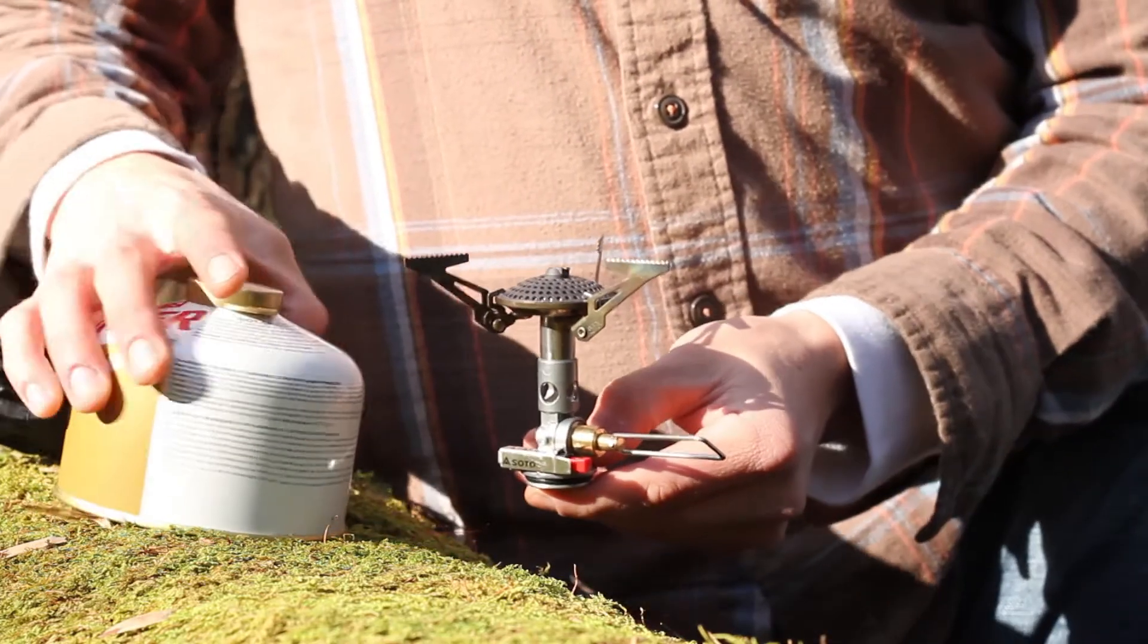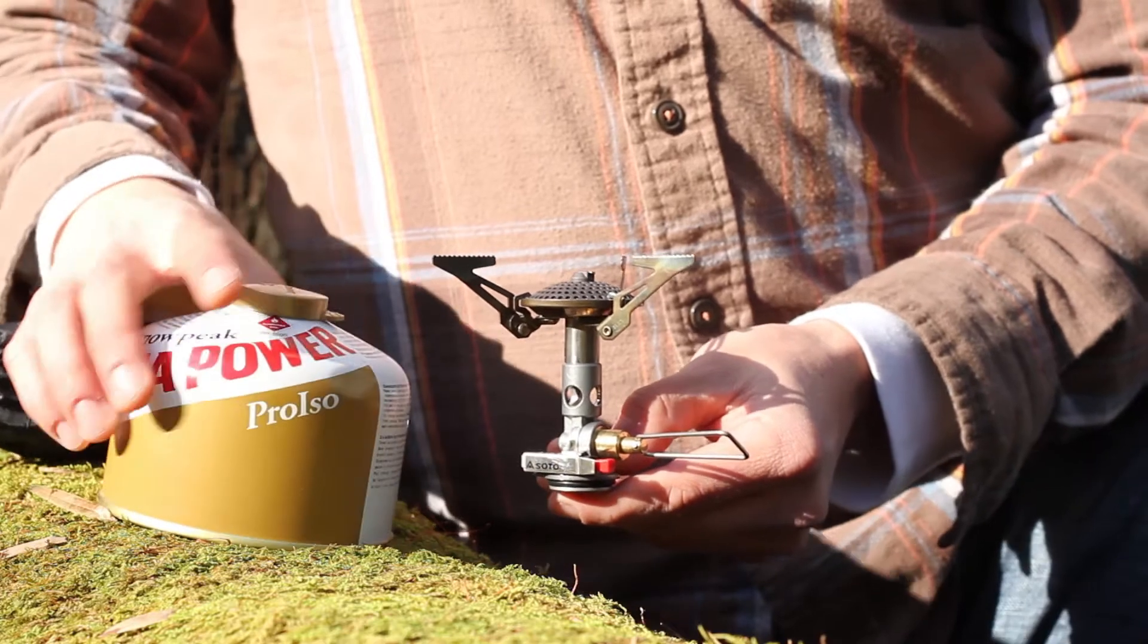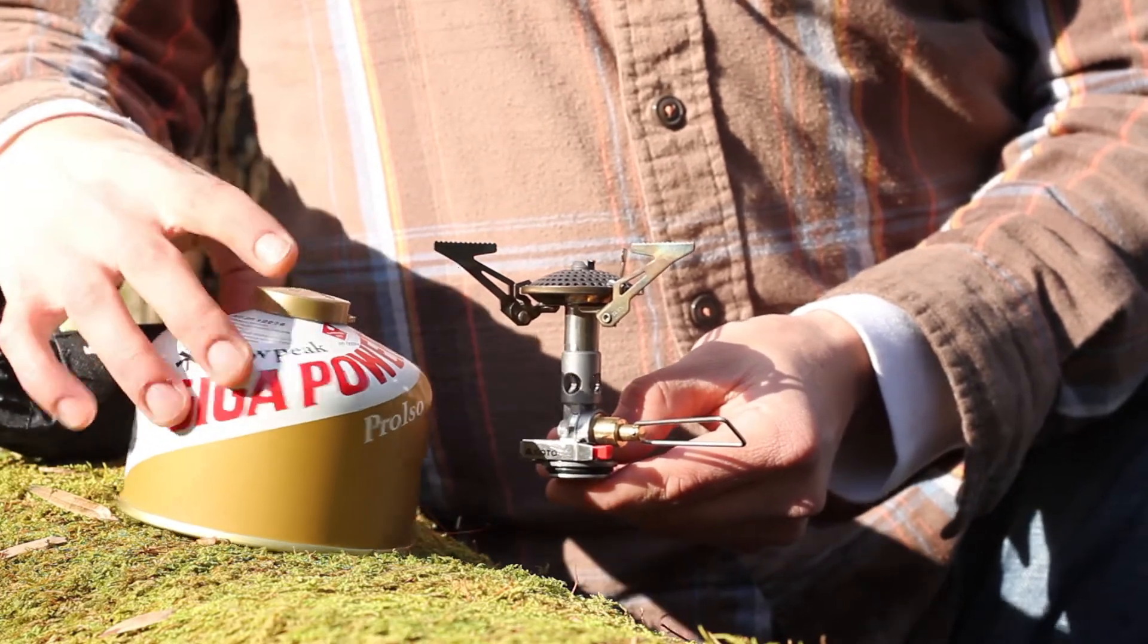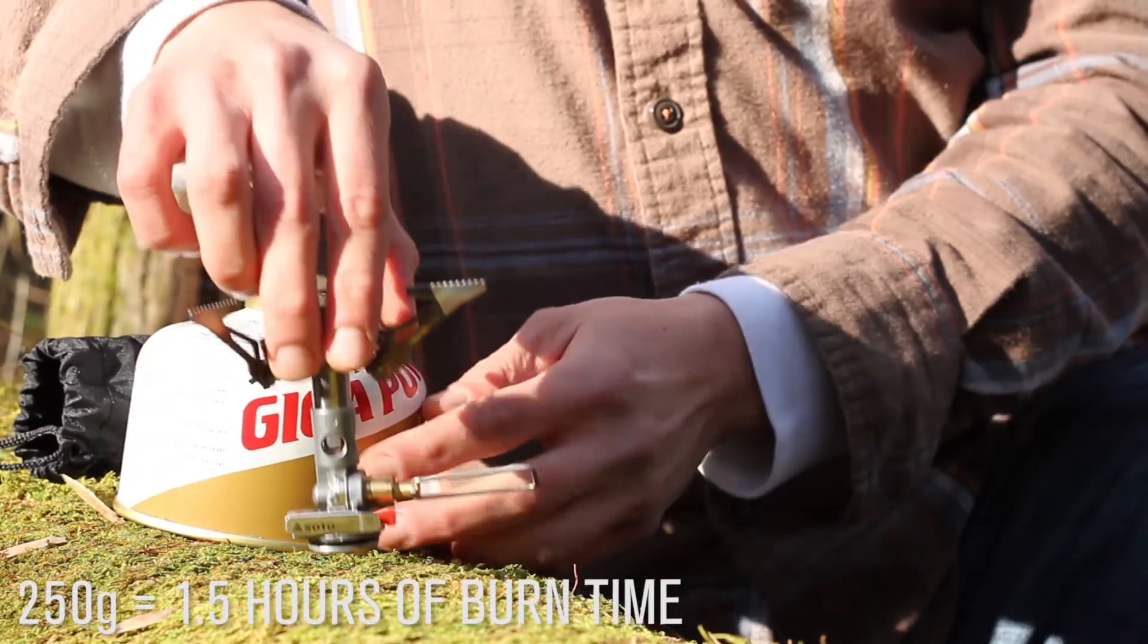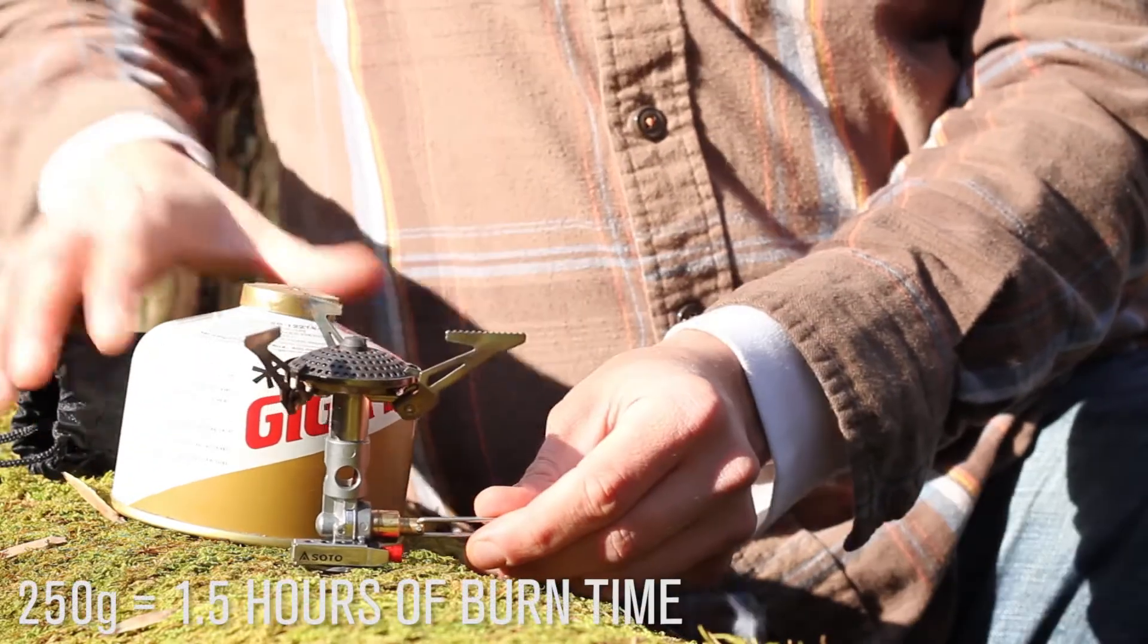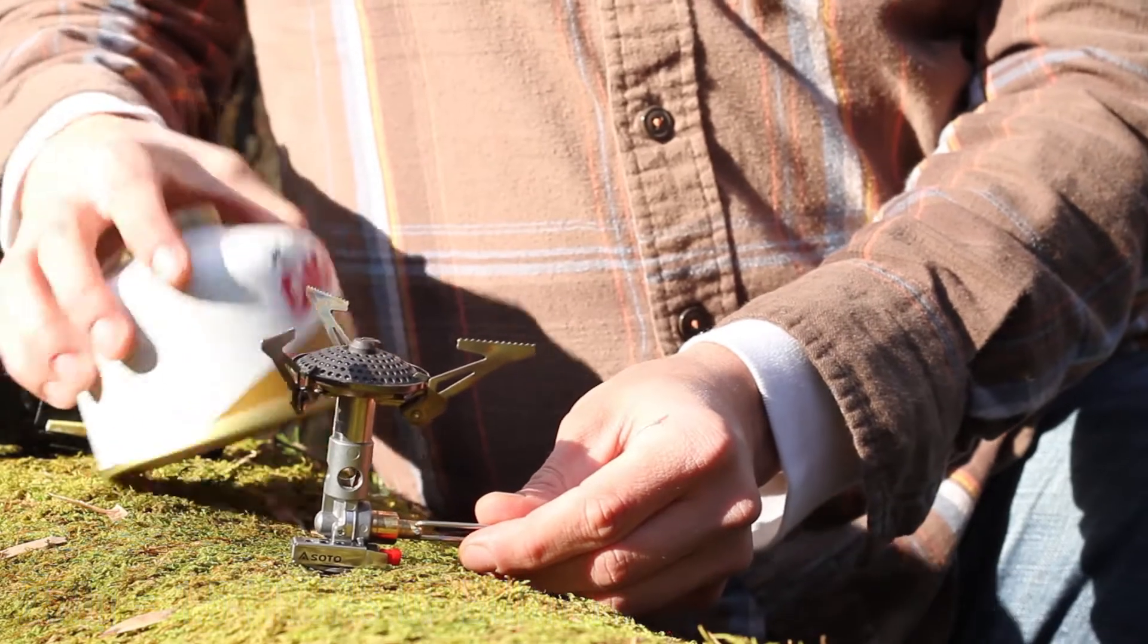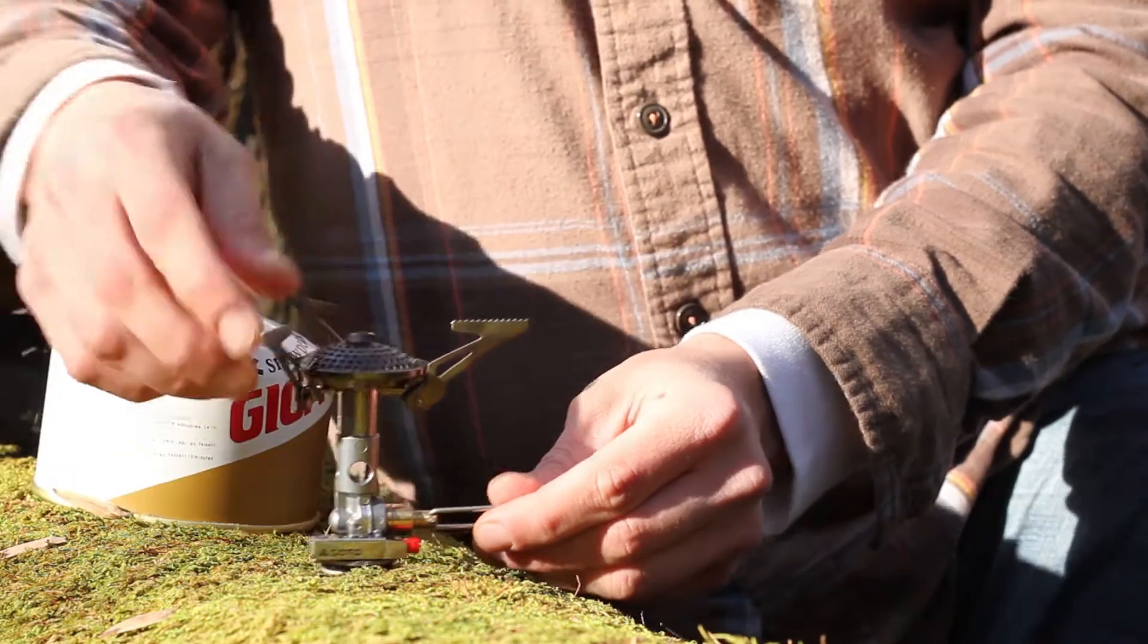Once you have the feet out you can pull down the little handle for the gas. A canister of this size which is 250 grams of fuel, the isobutane propane mix which the stove runs off of, this will last about one and a half hours of burn time which is about what you'd expect for the stove.